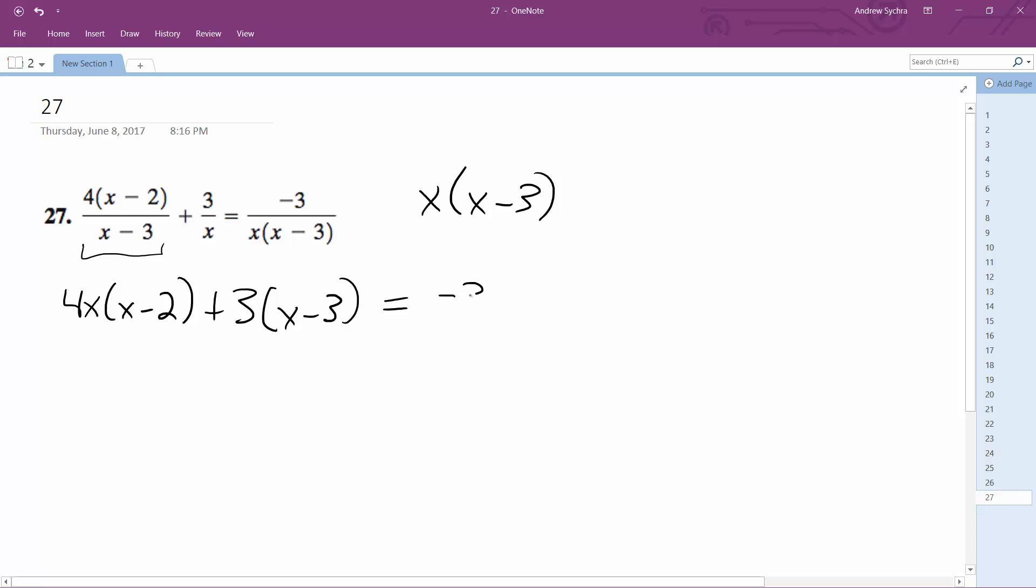and then we just don't need to multiply this by anything because it's just over the x times x minus 3. So we get 4x squared minus 8x plus 3x minus 9 equals negative 3.